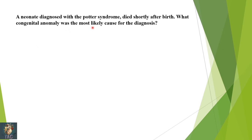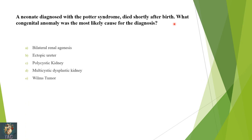Next: a neonate diagnosed with Potter's syndrome died shortly after birth. What congenital anomaly was the most likely cause — bilateral renal agenesis, ectopic ureter, polycystic kidney, multicystic dysplastic kidney, or Wilms tumor? Wilms tumor can cause renal agenesis and death but is not a feature of Potter's syndrome. Multicystic dysplastic and polycystic kidneys can lead to renal failure. Ectopic ureter is another developmental anomaly. Potter's syndrome is associated with bilateral renal agenesis. Correct option is A.